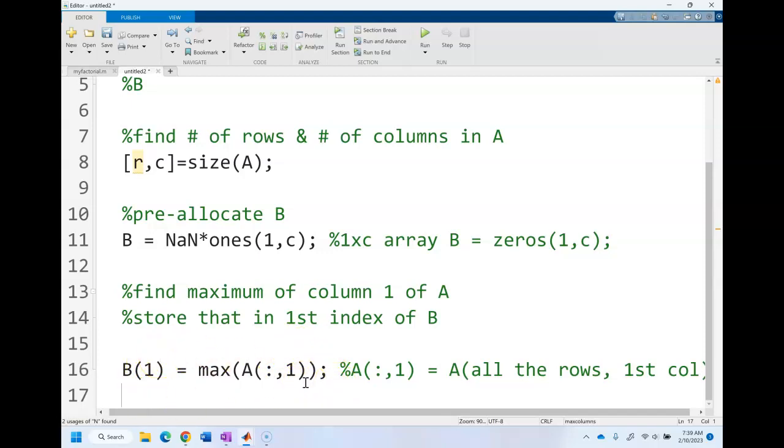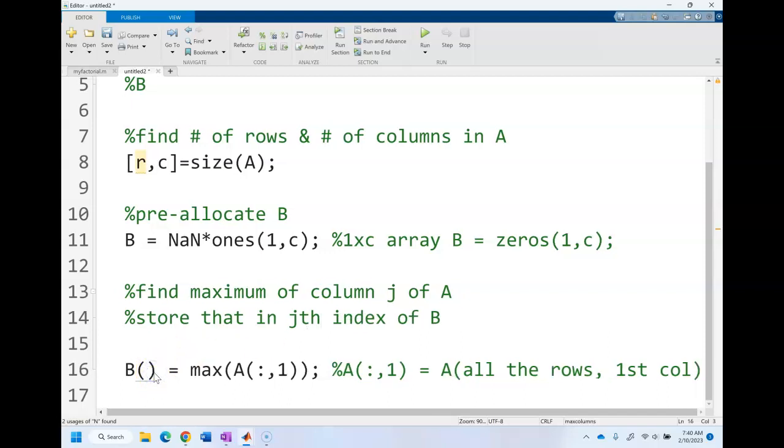But we don't know how many columns A is going to be. That's where our loop comes in. Instead of finding the maximum of a specific column, let's find the maximum of column j and let's store that in the j index of B. So let's change this to j.